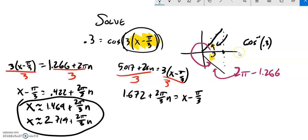Now I can check it pretty easily on my calculator. The way I'm going to check it is plug it back into the original equation and see if it works. So I'm just going to write these values down real quick: 1.469 and 2.719.